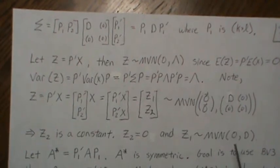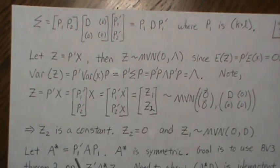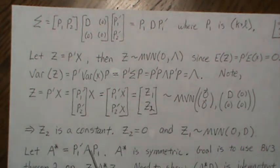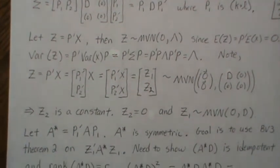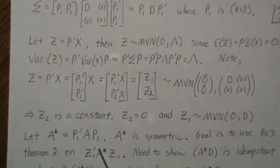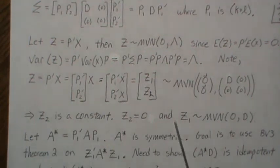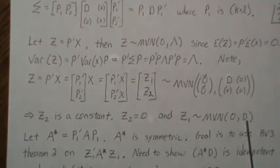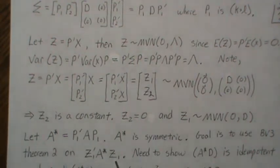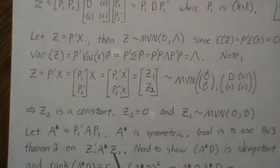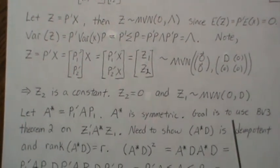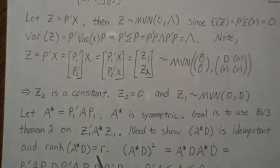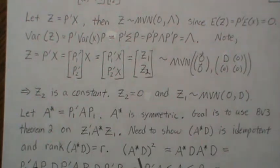Let A* = P1'*A*P1. A* is symmetric because A is symmetric. The goal is to apply Theorem 2 to z1'*A*z1, where z1 is multivariate normal(0, D) and D is positive definite. The conditions for Theorem 2 require showing that A*D is idempotent and has rank r.